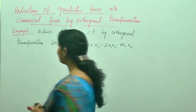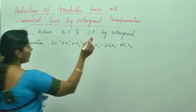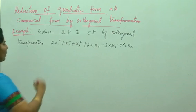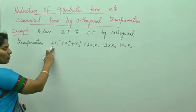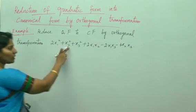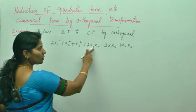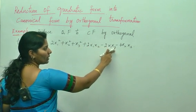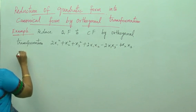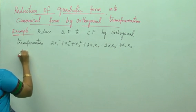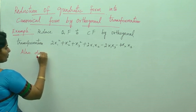This is how they will give you the question: Reduce quadratic form to canonical form by orthogonal transformation 2x1 squared plus x2 squared plus x3 squared plus 2x1x2, x1x3 minus x2x3. Also discuss the nature of the roots.